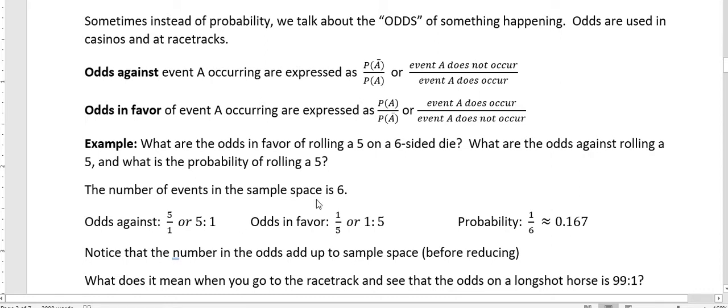But what's the probability? Notice that when we have this sample space, one and five, our sample space is six. And we know that to get probability, we take the chance of it happening, which is one, over the entire sample space, which in this case is six. So the probability is one over six, and that gives us 0.167.